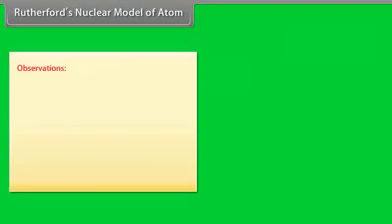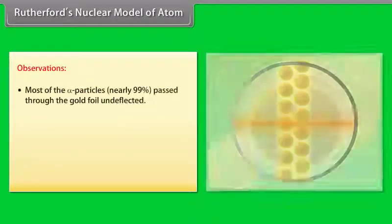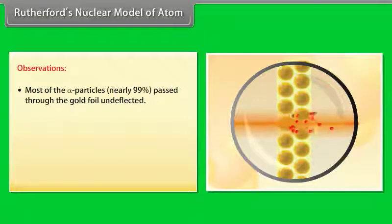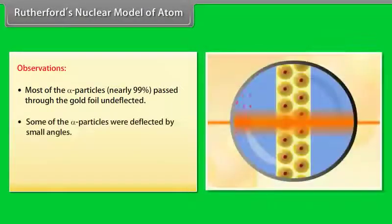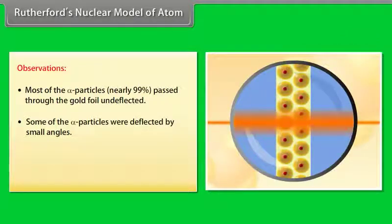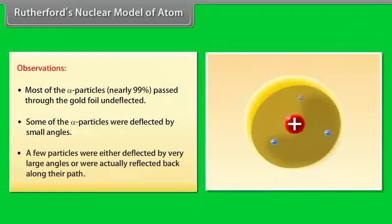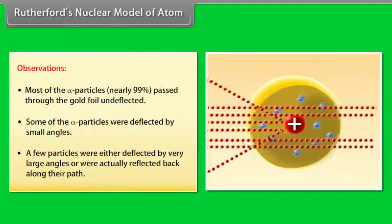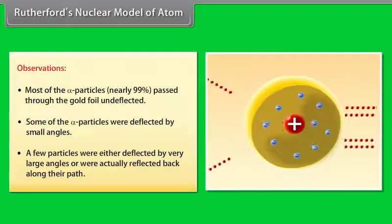Observations: (1) Most alpha particles — nearly 99% — passed through the gold foil undeflected. (2) Some alpha particles were deflected by small angles. (3) A few particles were deflected by very large angles or were actually reflected back along their path.